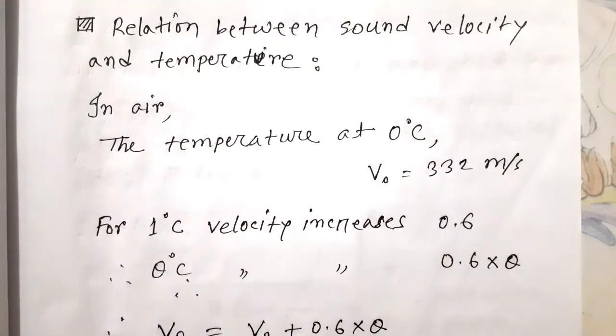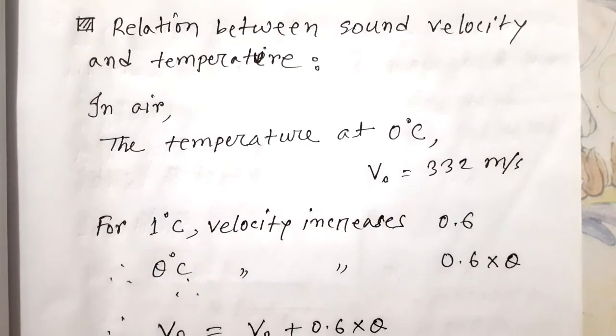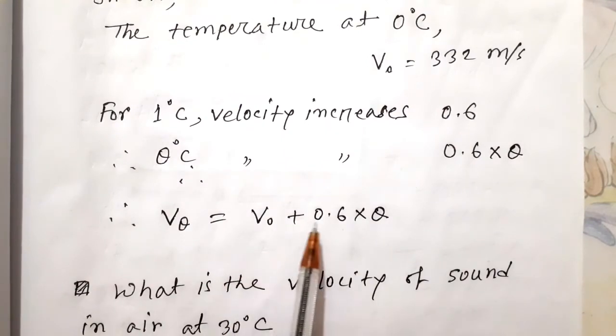In air, the temperature at 0°C, V₀ = 332 m/s. For 1°C temperature increase, velocity increases by 0.6. So for θ degrees Celsius, it's 0.6 × θ. At θ degrees Celsius, velocity will be V_θ = V₀ + 0.6θ. We can use this formula to find sound velocity at any temperature.